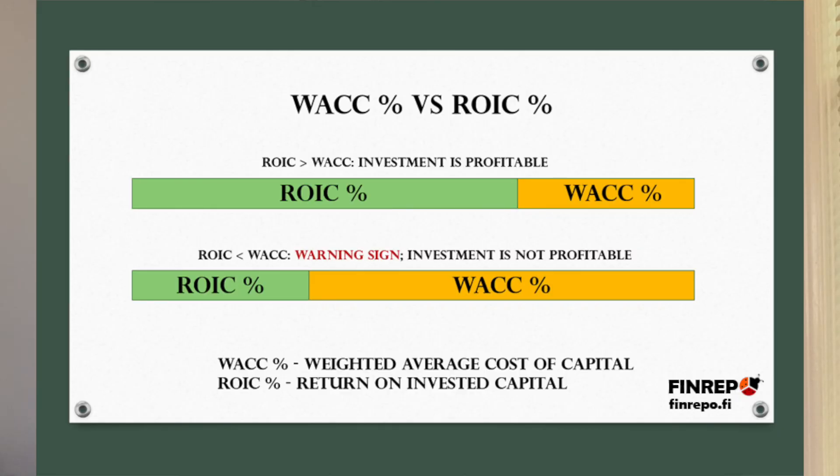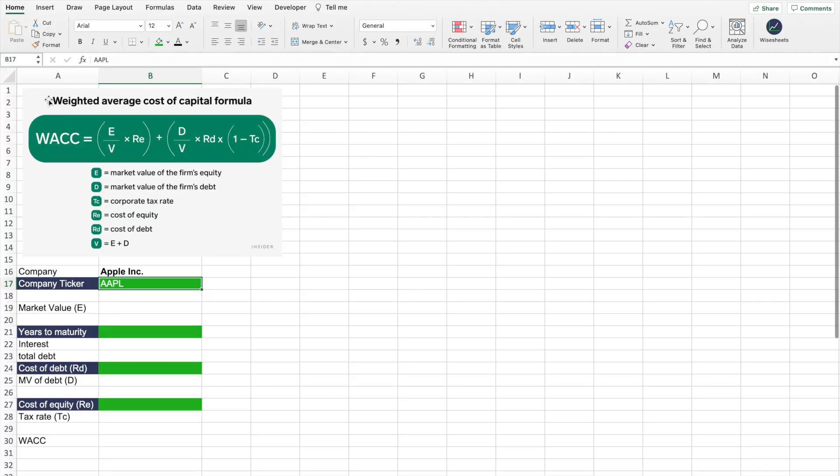For stock investments, the weighted average cost of capital is a great metric because it allows you to see the average cost a company has to raise money. This number can be compared with the company's return on invested capital. If the return on invested capital is greater than the WACC, this is a very positive signal — it indicates the company is generating a higher return on its investments than the cost it has to finance those investments. Companies in a good financial position have a lower WACC, so this measure can also be used to assess the risk of investing in a particular company.